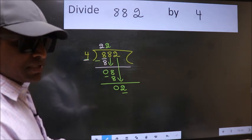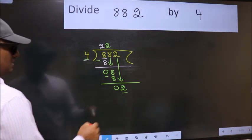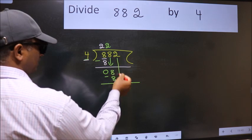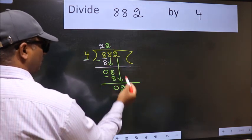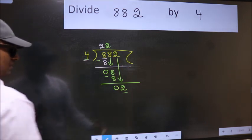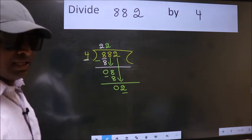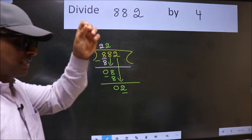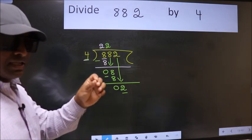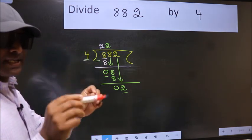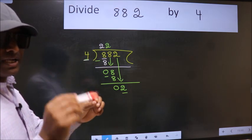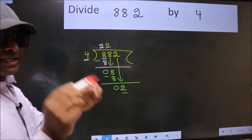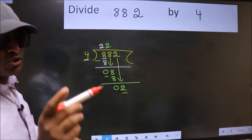So what many do is they directly put dot take 0 which is wrong. Why is it wrong? Because just now you brought this number down. And in the same step, you want to put dot take 0 which is wrong. I repeat. Bring down the number and also put dot take 0. Both at the same step. You should not do.